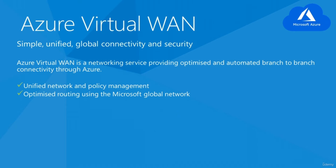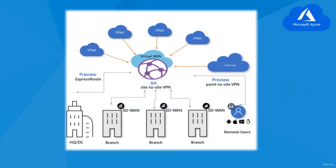With Azure Virtual WAN, we could create a simple unified global connectivity with security offered on the cloud for various kinds of resources, applications, virtual machines, or other tools. Azure Virtual WAN is a networking service providing optimized and automated branch-to-branch connectivity through Microsoft Azure. Virtual WAN allows customers to connect branches to each other and Azure, centralizing their network and security needs with virtual appliances such as firewalls, network security services, and more.